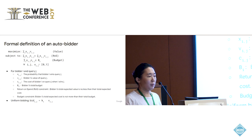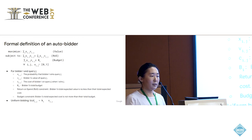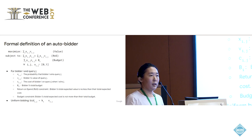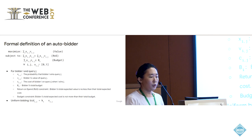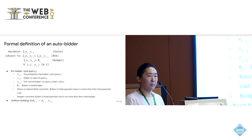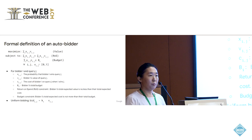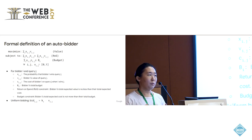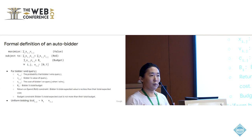Formally, for bidder i and query j, we let x_ij denote the probability that bidder i wins query j — for a deterministic auction this is zero or one; for a randomized mechanism it can be between zero and one. We let v_ij denote bidder i's value for query j, and c_ij denotes the cost to bidder i when they win query j. Capital B_i denotes bidder i's total budget. We consider two constraints: the first is RS (return on spend), where total expected value is no less than total expected cost; the second is a budget constraint, where total expected cost is no more than the budget. One bidding strategy we consider is uniform bidding, where each bidder has a uniform multiplier on their value to each query, raising or lowering bids uniformly across all queries.